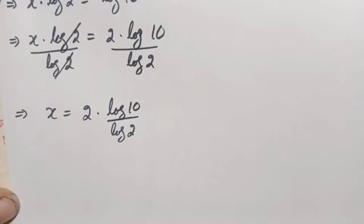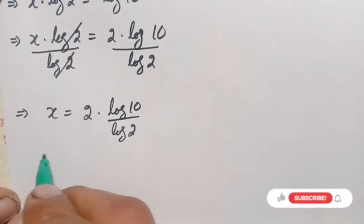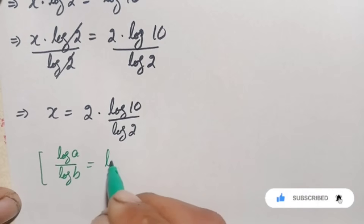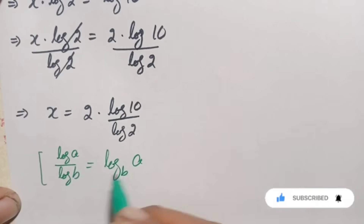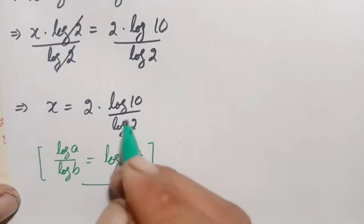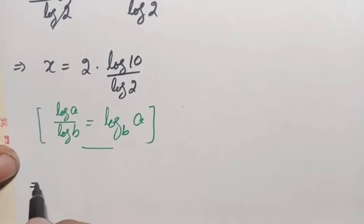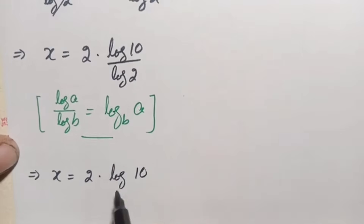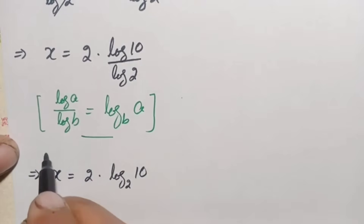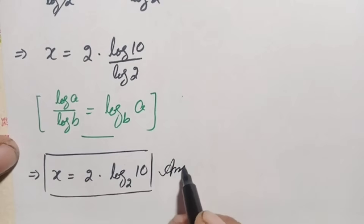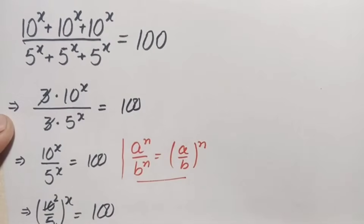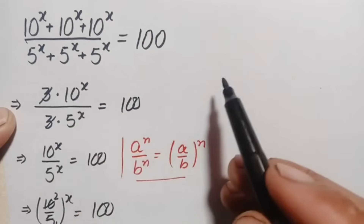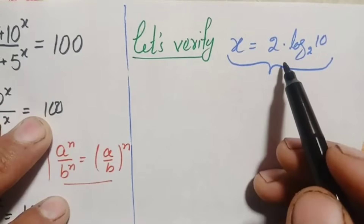Now we use the change of base logarithm identity: log of a divided by log of b equals log of a with base b. Applying this identity here, x equals 2 times log of 10 with base 2. So finally, x equals 2 times log₂(10) is our answer — the value of x in this interesting exponential algebra math problem. Now we will verify this value of x is the exact and correct answer.